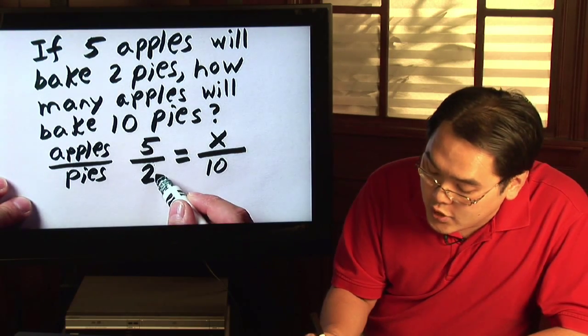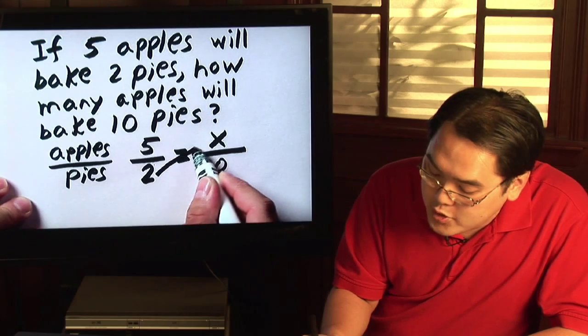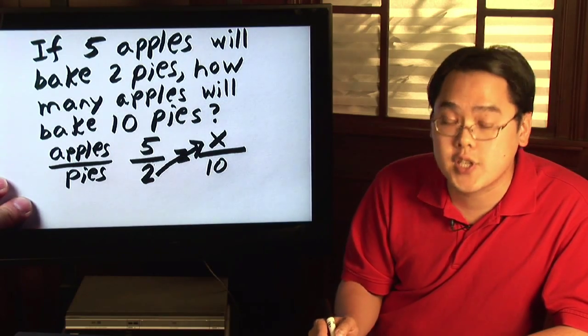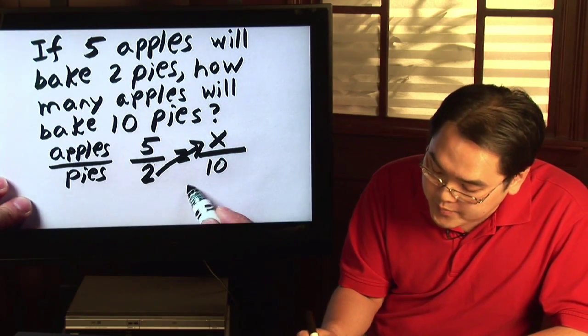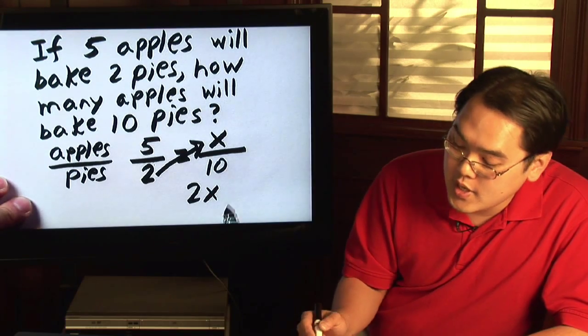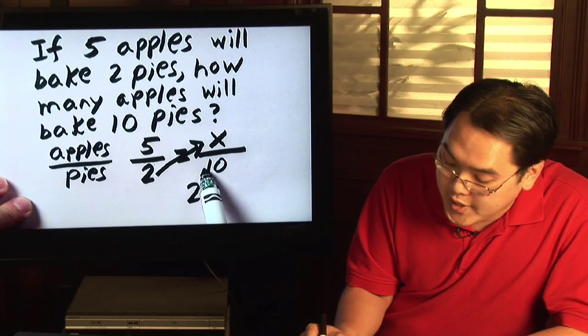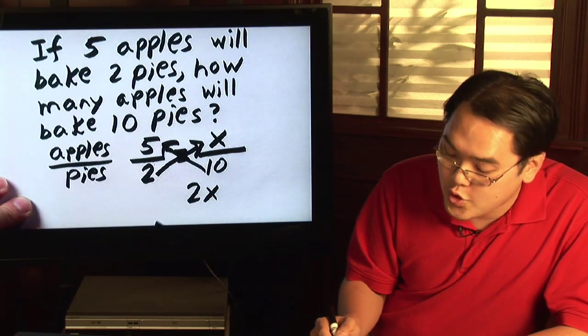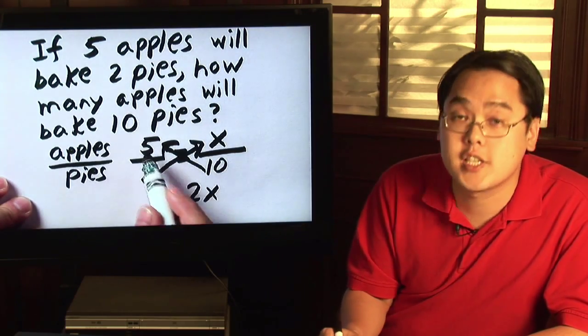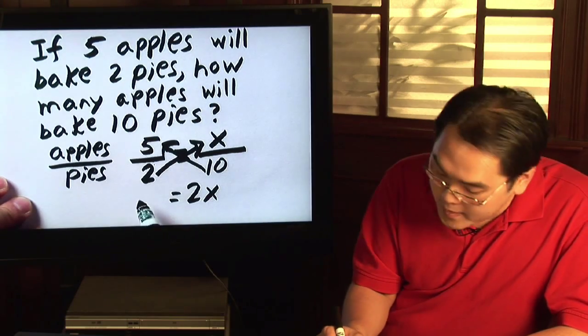What that means here is you take one denominator and you multiply it with the numerator on the other side. So you have two times x is two x and then you do it the same way for the other fraction. Take the other denominator and multiply it with the numerator on the other side. So ten times five is going to give you 50.